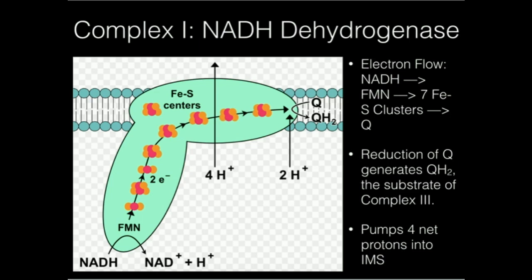And at the very end of the iron sulfur centers, the electrons are going to be transferred to coenzyme Q, shown right here, and that's going to ultimately reduce that to QH2, which is reduced coenzyme Q, or ubiquinol. And that ubiquinol producing that is the ultimate goal of this enzyme.